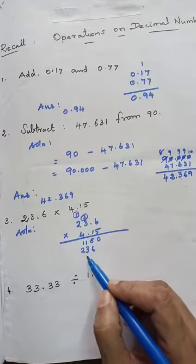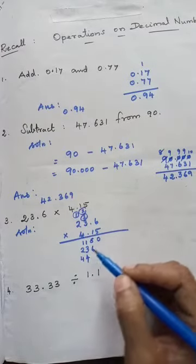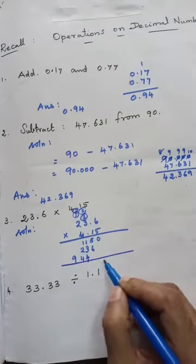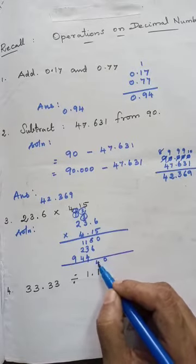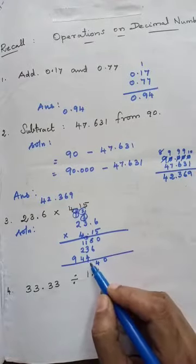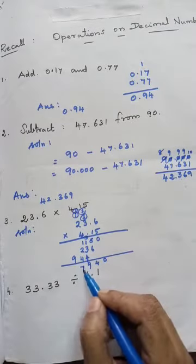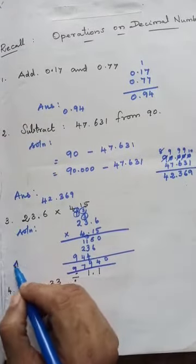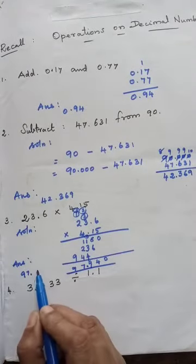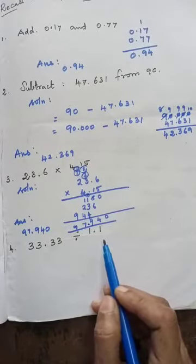Then multiply by 4: 4 ones are 12 plus 2 is 14, remainder 1. 4 twos are 8 plus 1 is 9. Now add all: 0, 6 plus 8 is 14, remainder 1. 1 plus 2 is 3, 3 plus 4 is 7, so the answer is 97. After 3 digits you keep the point: 97.940.